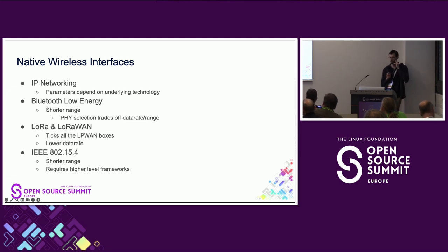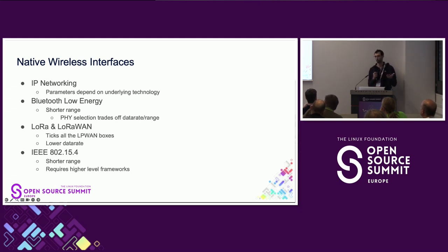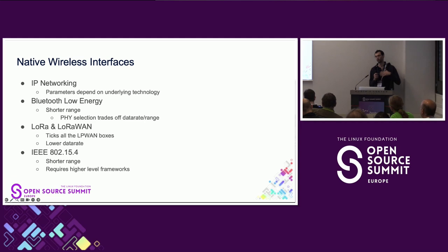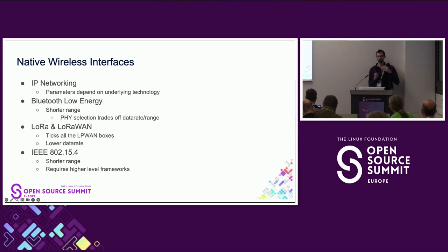Secondly, you've got Bluetooth Low Energy. Bluetooth is shorter-range than some other options, but especially with Bluetooth 5 and the additional PHY options, you can trade off increased range for reduced data rates. Third, you've got LoRa — which is the physical layer — and LoRaWAN, the networking layer on top. This is probably the most 'true' LPWAN system: very long range, low data rate, low duty cycle. But as a consequence, the physical data you can send over these links is quite small.